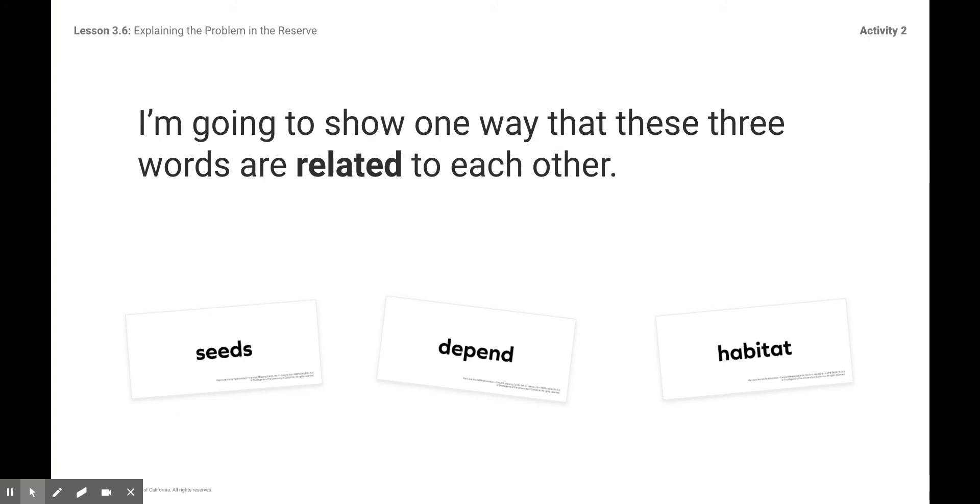Here are some words that we have been using throughout this unit. Seeds, depend, and habitat. Depend, remember we said that it means that they need each other, that they depend on each other. And habitat is the places that we've been studying. It's the places where plants and animals grow.